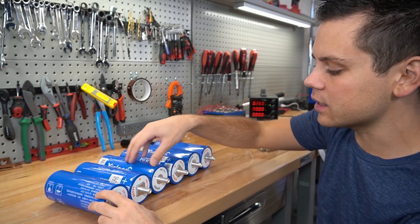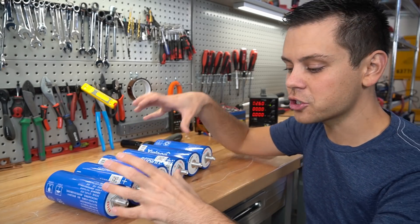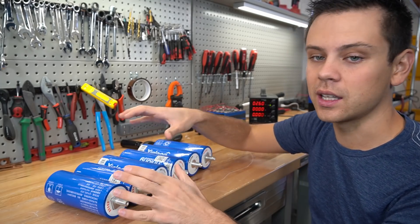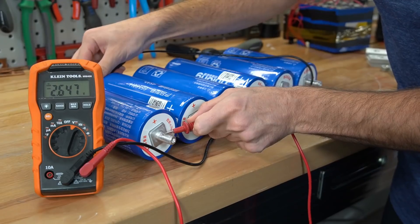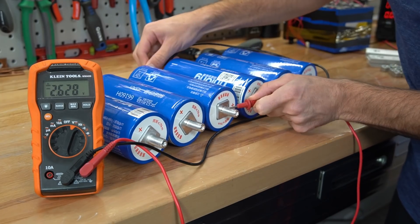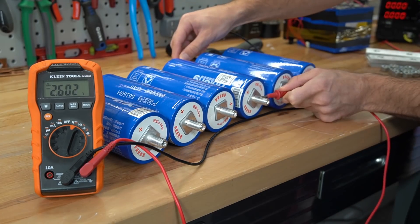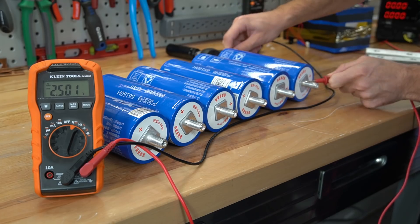First we're going to build a 6s configuration pack. These came straight from the box from China so we're going to test the voltage first. We have 2.64 volts, 2.64, 2.62, 2.60, 2.58, and 2.50.